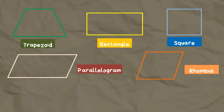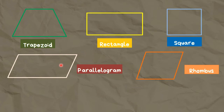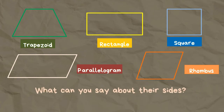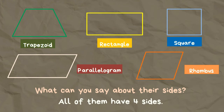Let's take a look at these quadrilaterals. We have trapezoid, rectangle, square, parallelogram, and rhombus. What can you say about their sides? All of them have four sides.